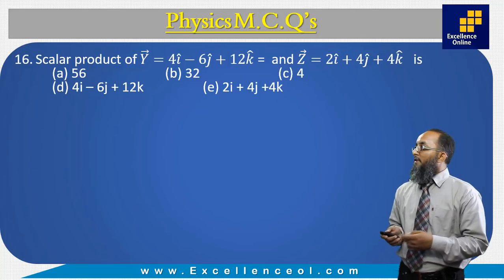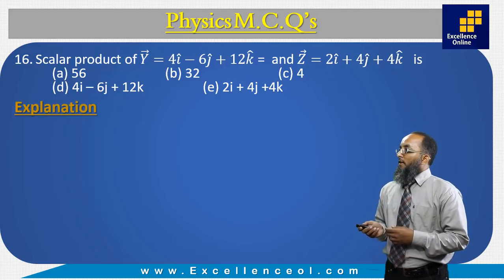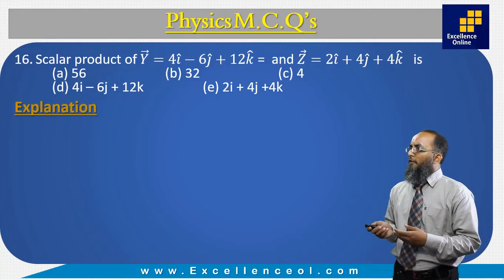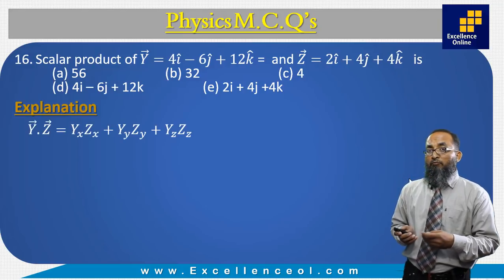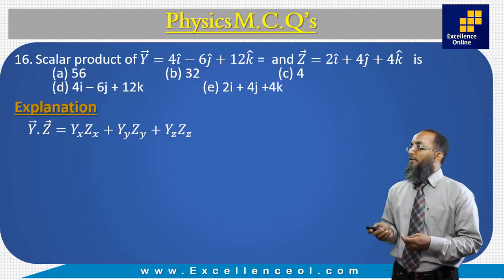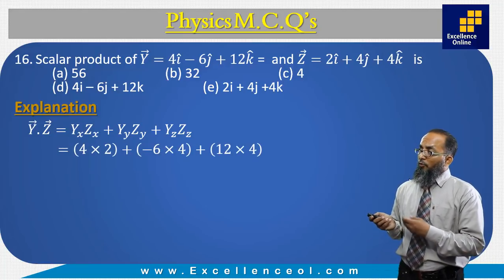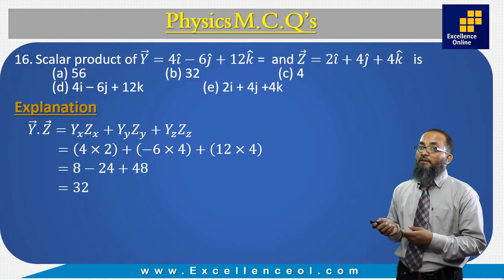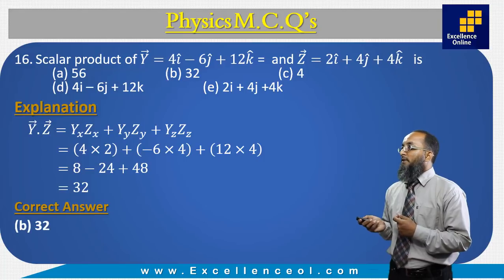The next question: the scalar product of vectors Y and Z is — when two vectors are given in component form, their dot product is the sum of the products of the corresponding components. Multiplying the x, y, and z components of the two vectors and adding them, we get 32. The correct answer is B: 32.